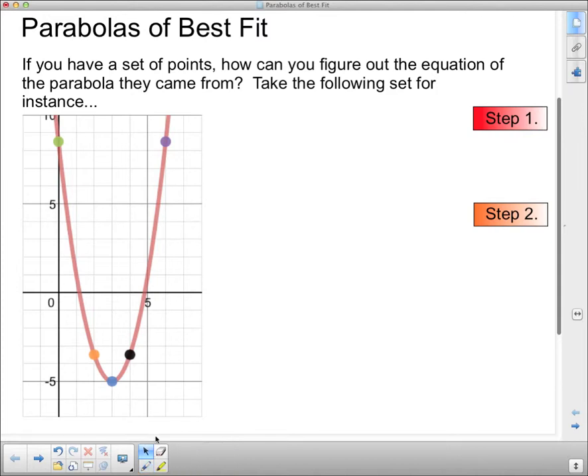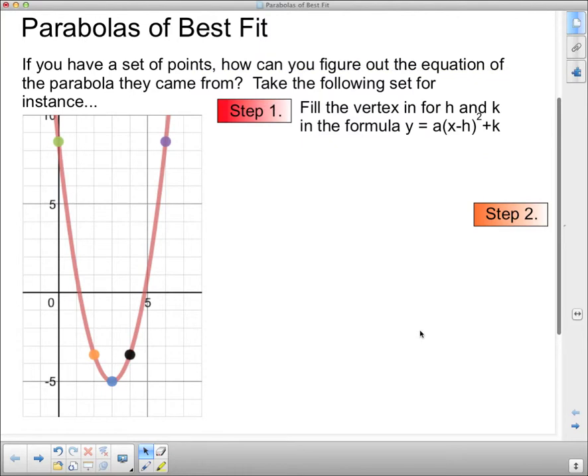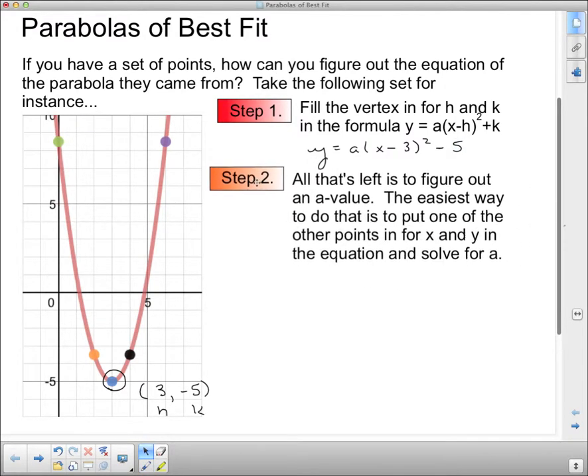The first thing we're going to do for step 1 is we're going to fill in the vertex for h and k in y equals a(x minus h) squared plus k. So in this case, here's our vertex, and that is the point 3 and negative 5. So this is my h and this is my k. So I need to fill in y equals a, x minus 3 squared, minus 5. Now that I've filled that in, we're going to move on to step 2.